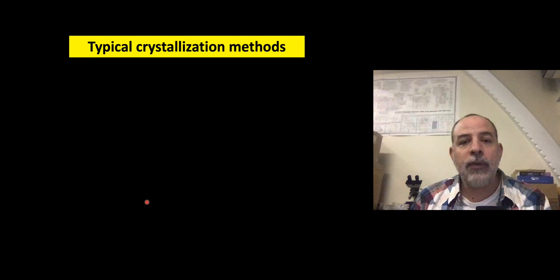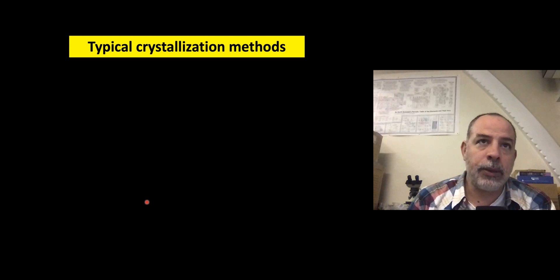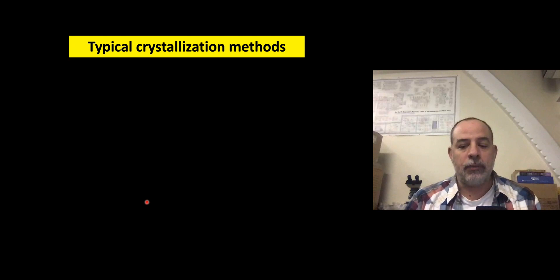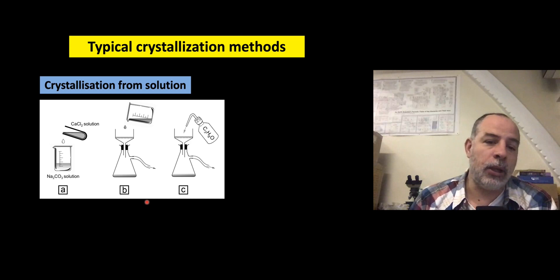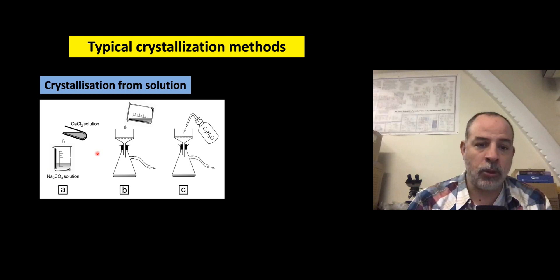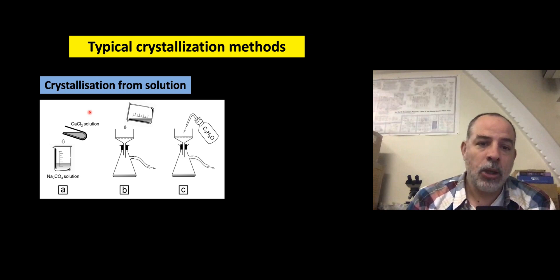I am going to give you a quick overview of typical crystallization methods we use in the laboratory — methods that people in my group use quite a lot. Crystallization from solution is very easy: you have two solutions made of ions or compounds which are quite soluble, and when you mix them you produce a solid which is more insoluble. For example, a solution containing sodium carbonate mixed with a solution containing calcium chloride produces calcium carbonate — calcite.